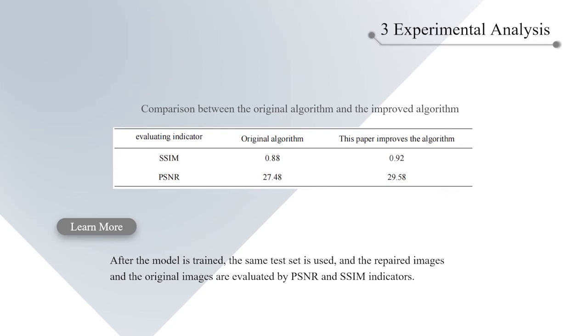The face dataset, CelebA, is divided into training set and test set according to 9:1. Before using the training set to train the network model, the image is processed to add occlusion.